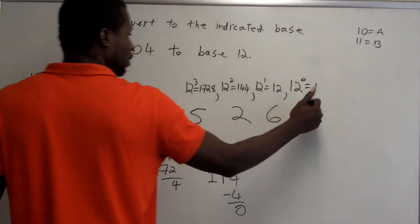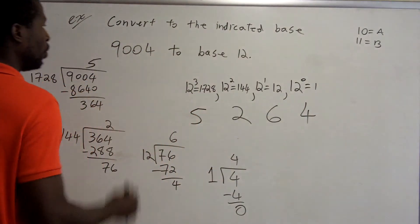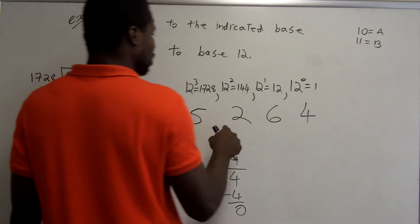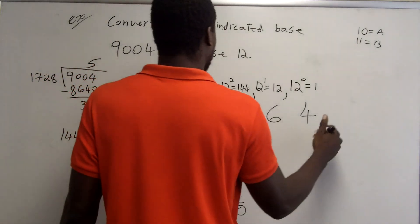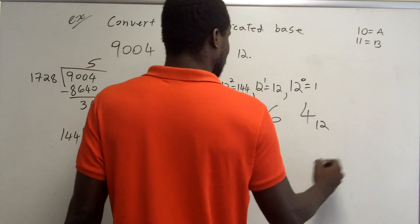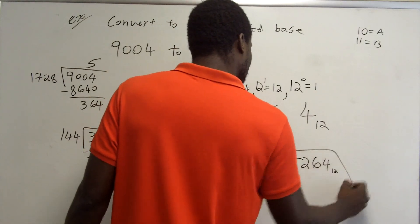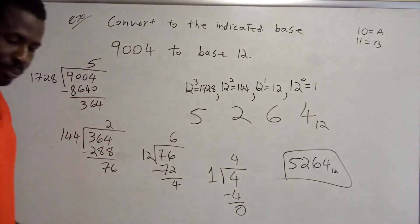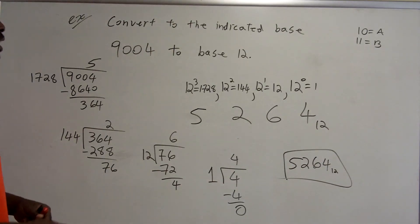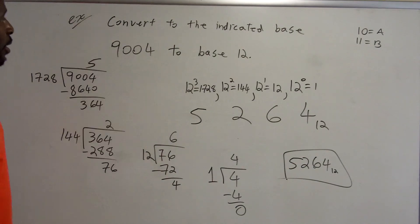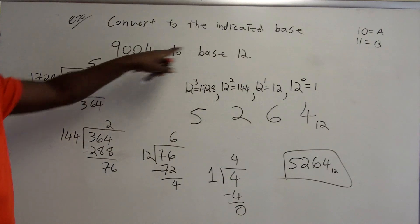So the number that goes in this place is 4. So the number 9,004 base 10 is actually 5,264 base 12. So the answer to this, 5,264 base 12. That's the final answer. All right. So now we've seen an example of converting a base higher than 10 to base 10. And we've also seen converting base 10 to a base higher than 10.